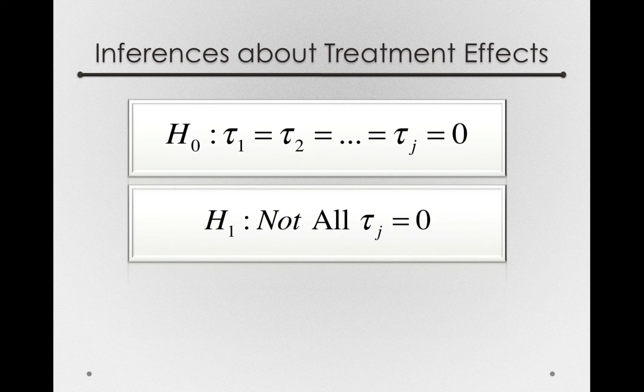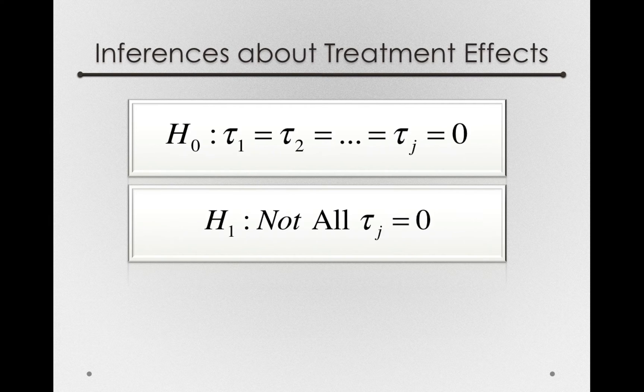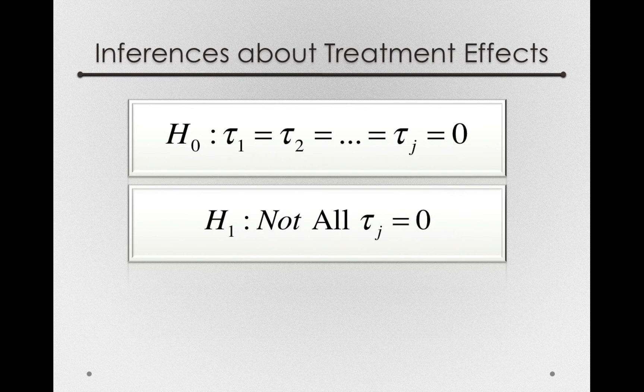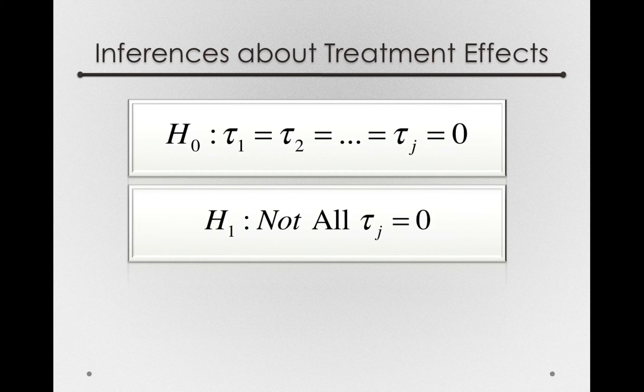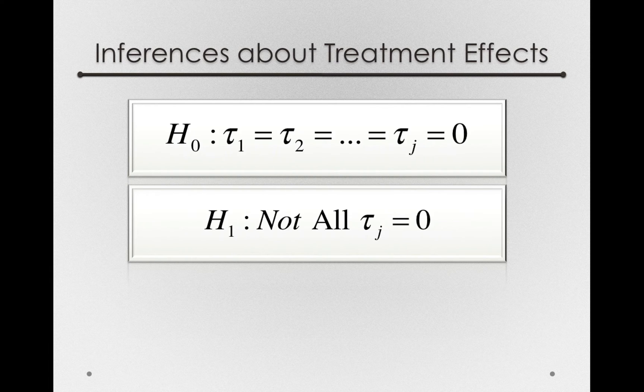The alternative hypothesis, if that is true, simply states that not all the tau sub J's are equal to 0, that the factor actually is used in the population to determine how much a person is paying for a flight.